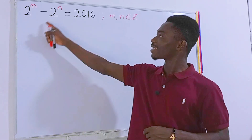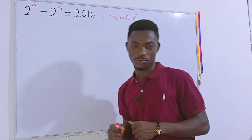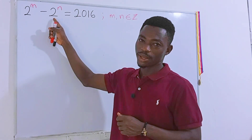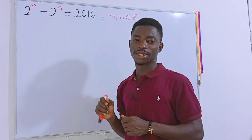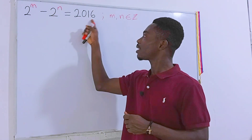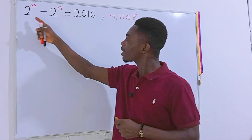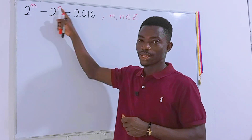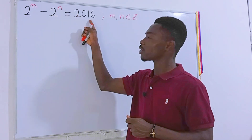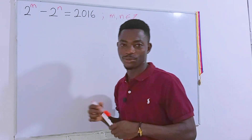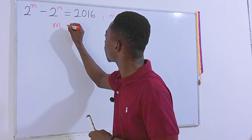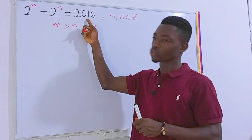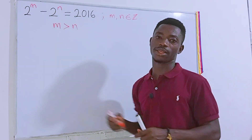This question is analytical because we need to analyze it before we can solve it. On the left-hand side, the bases are the same but the powers are different. On the right-hand side we have a positive number: 2016. The fact that the bases are the same means that the power m must be greater than the power n — that's how the right-hand side ends up positive. So we can write a simple inequality: m is greater than n.